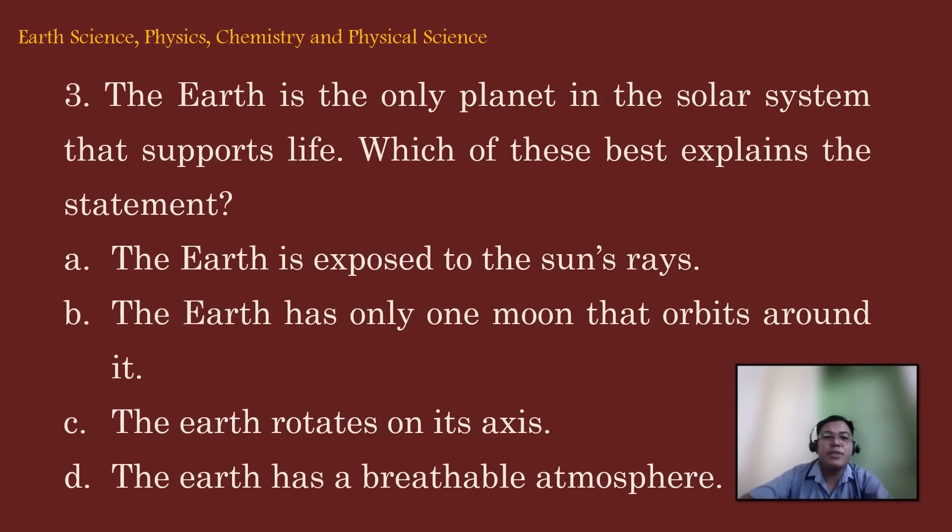Let's move on to item number 3. The earth is the only planet in the solar system that supports life. Which of these best explains the statement? A. The earth is exposed to the sun's rays. B. The earth has only one moon that orbits around it. C. The earth rotates on its axis. And D. The earth has a breathable atmosphere.